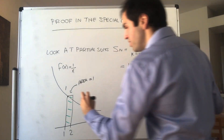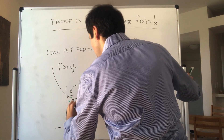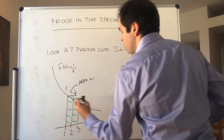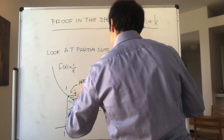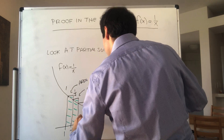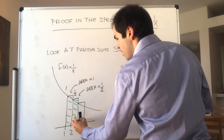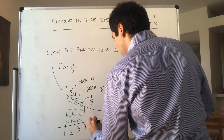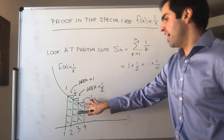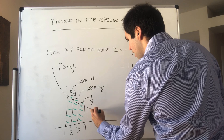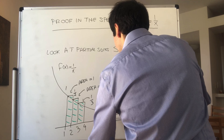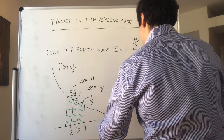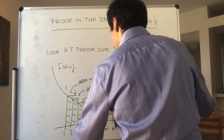Then consider the rectangle with base from 2 to 3 and height 1 half; the area is one times one half, which is one half. And so on and so forth — the third one has base 1 and height 1 third and therefore area 1 third. The nth rectangle has base from n to n plus 1 and height 1 over n, giving area 1 over n. You just continue like that with smaller and smaller rectangles.